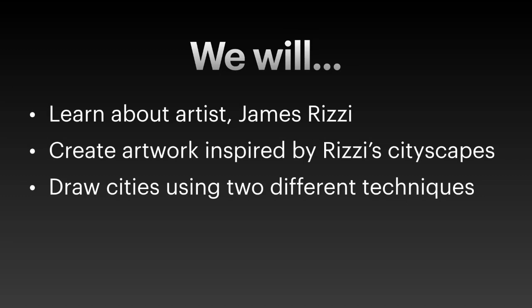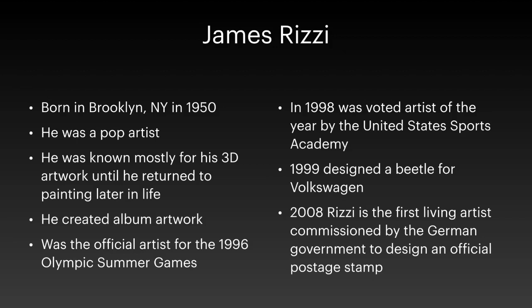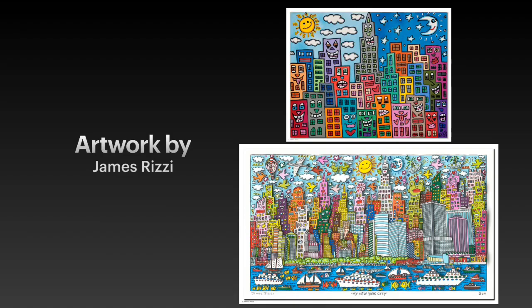He was born in Brooklyn, New York. He was a pop artist, known mostly for his 3D work until he later began painting again. He created album artwork, was the official artist for the 1996 Olympic Summer Games, and even designed a Volkswagen Beetle.